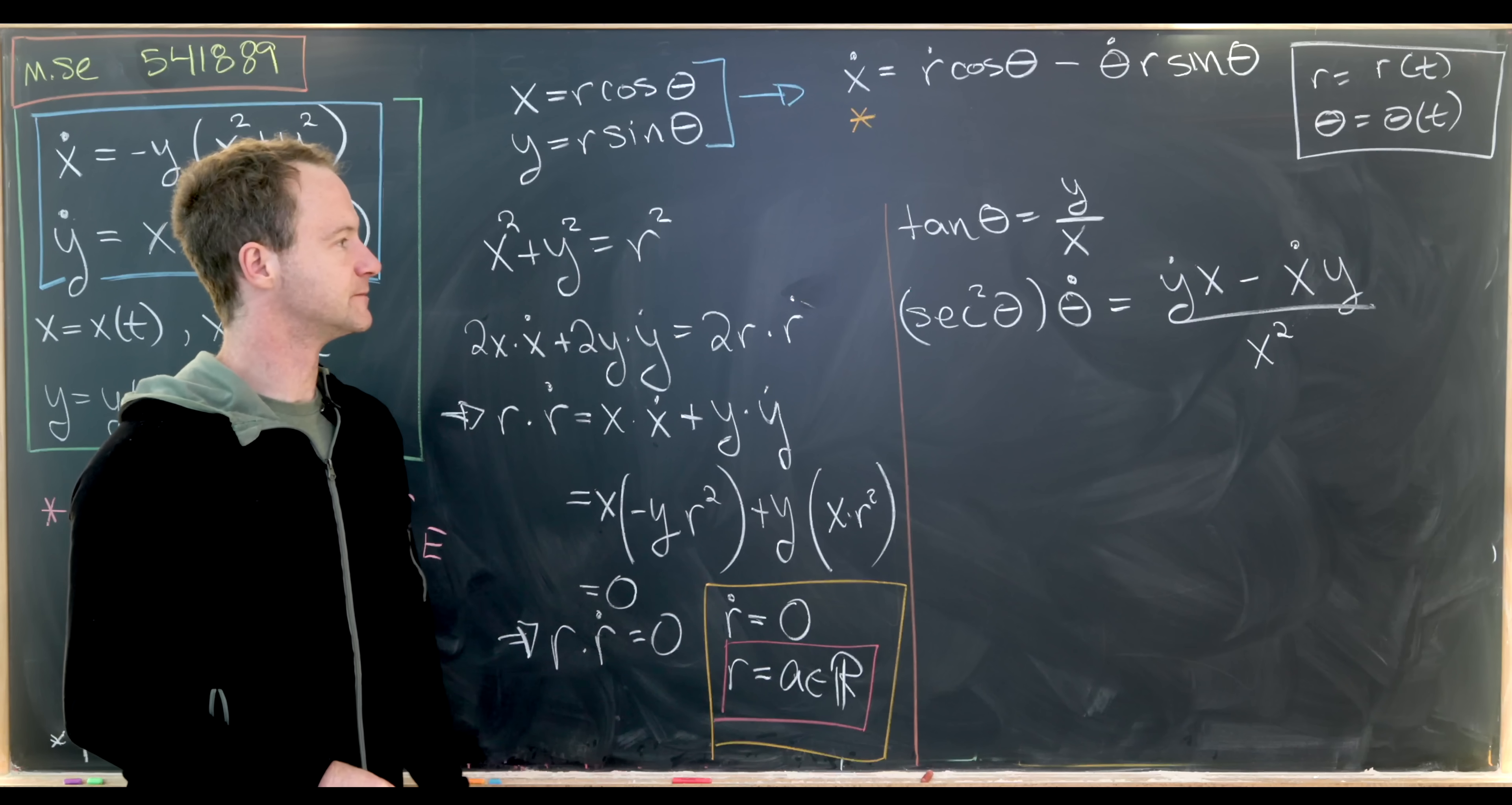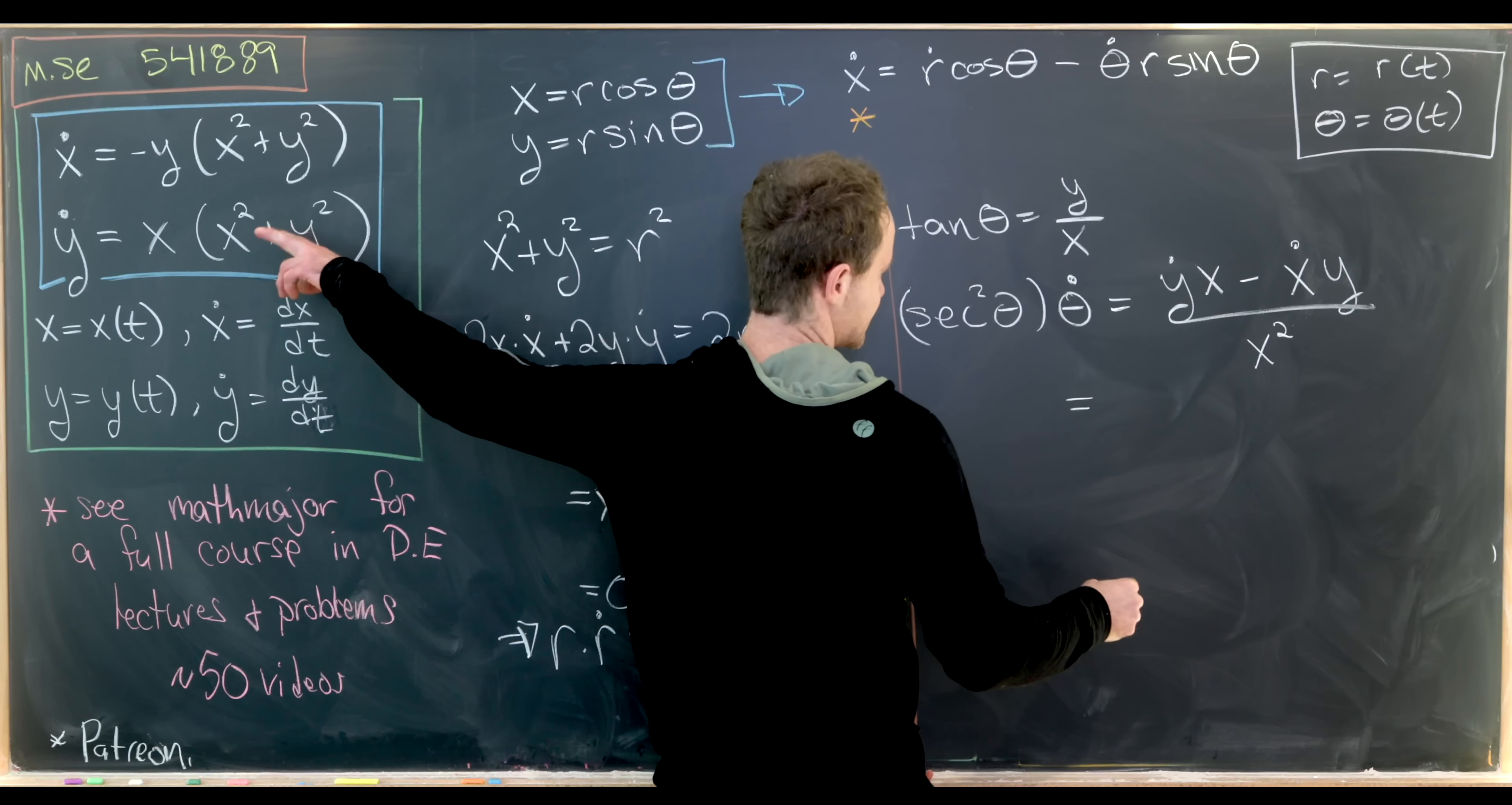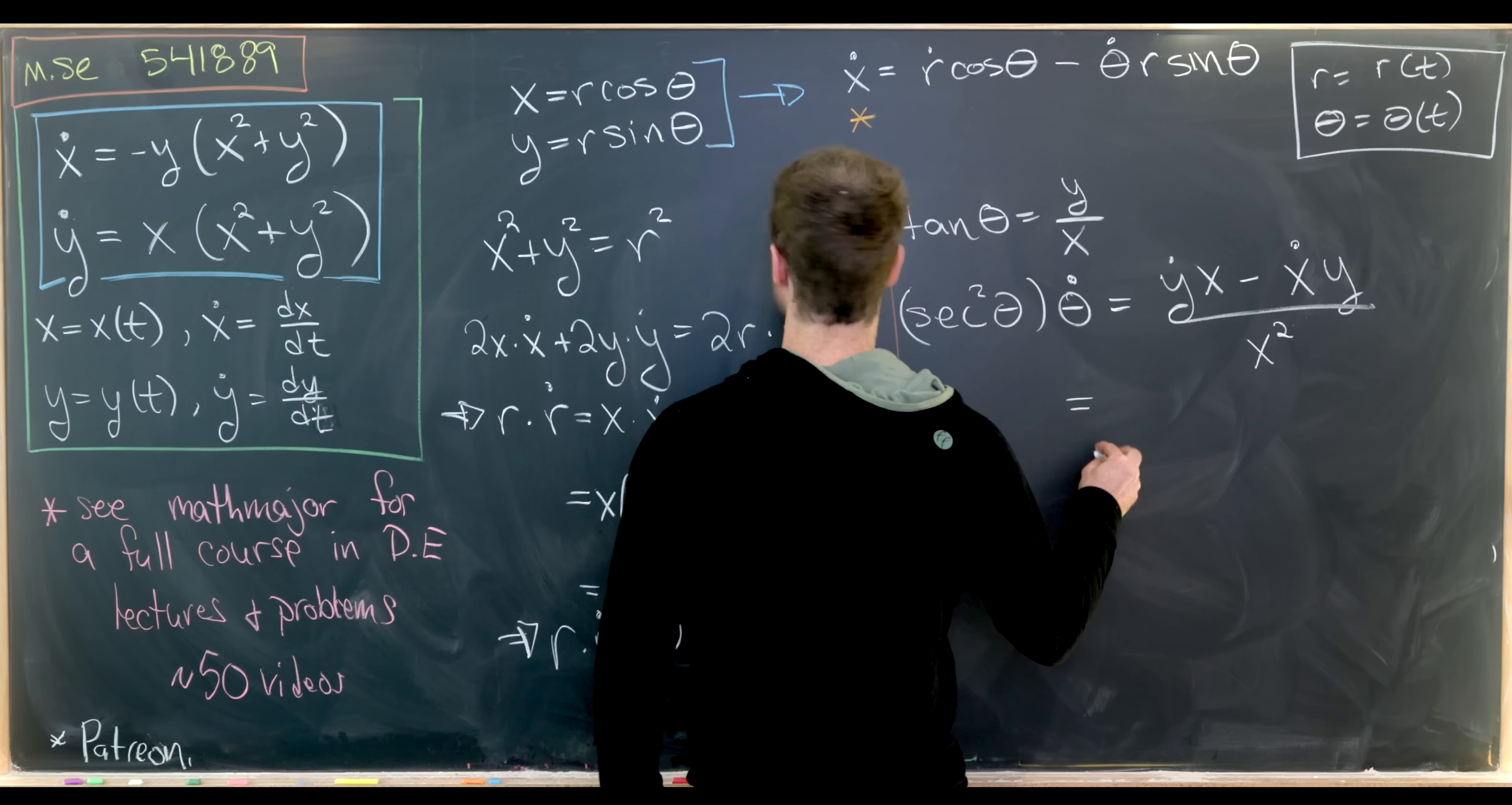So that will give us y dot times x minus x dot times y over x squared. Okay, nice. But now we know y dot and x dot from this situation up here. So that's going to give us, let's see,